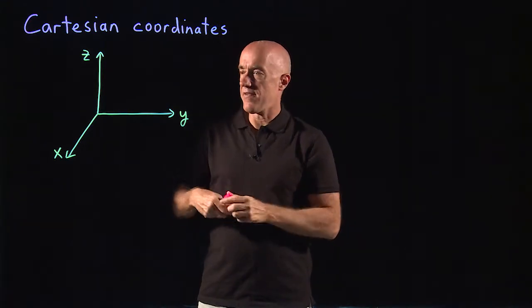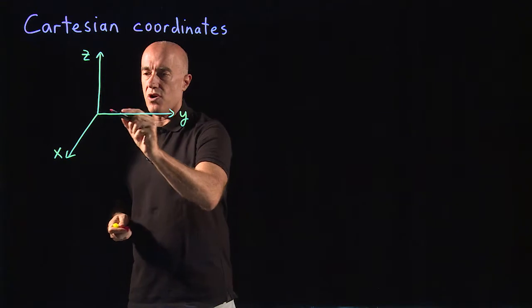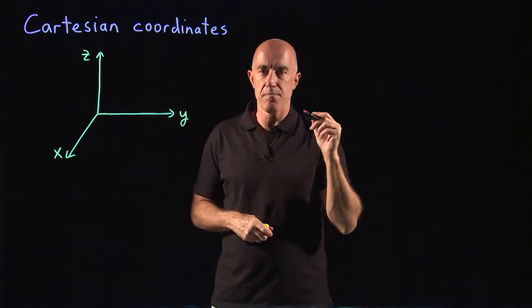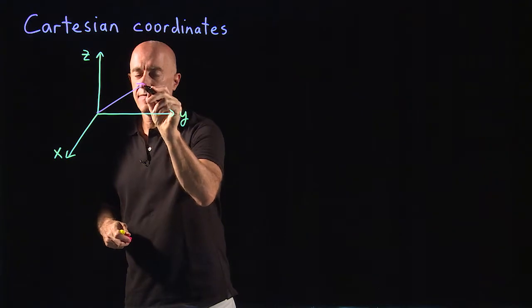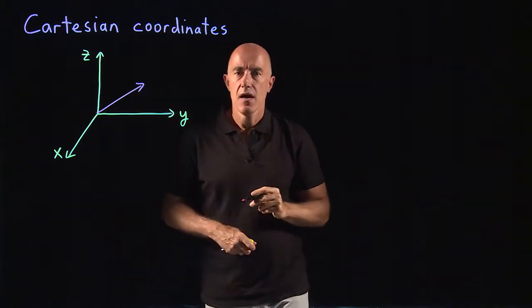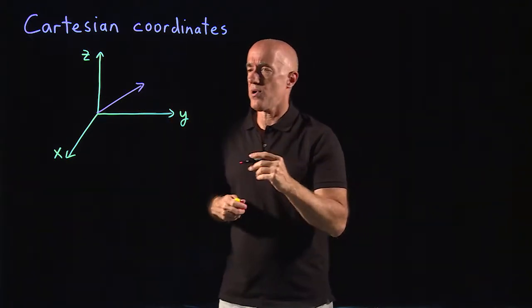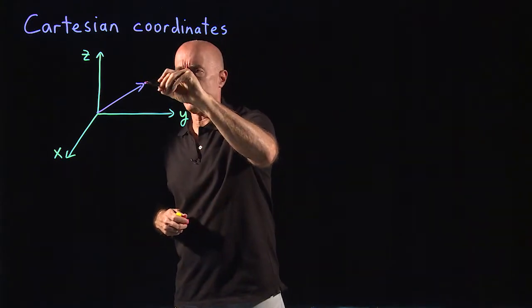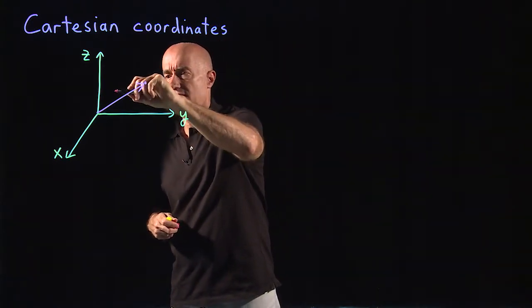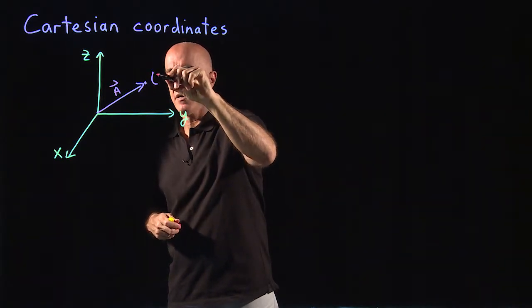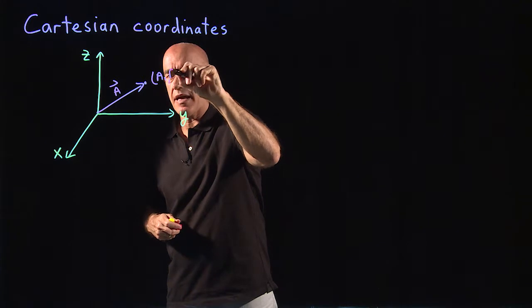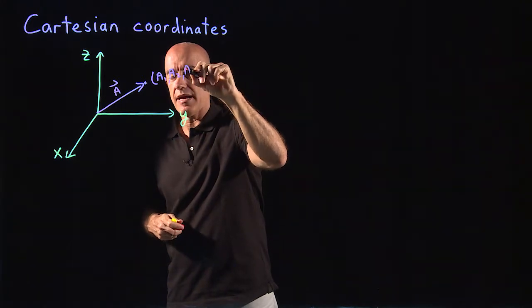If we have a vector, we can draw a vector with the base at the origin. So here's a vector. We want to know what point is it pointing to? This point here, this is our vector a, and we can call this point here a1, a2, a3.